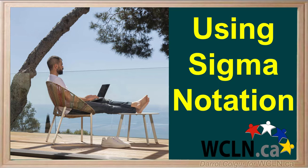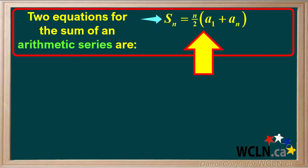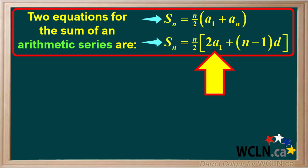Given segment notation and using equations we previously used, we can determine the sum of various types of series. Two equations that can be used to find the sum of an arithmetic series are: Sn equals n over 2 times a1 plus an, and Sn equals n over 2 times 2a1 plus n minus 1 times d.